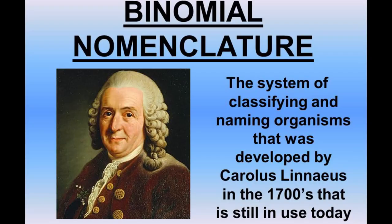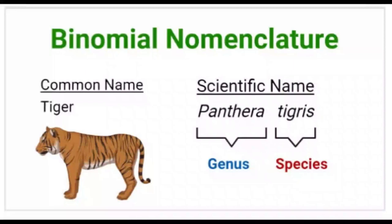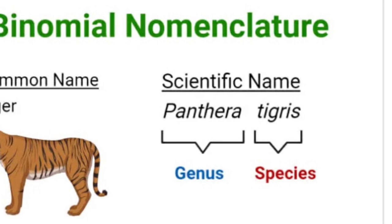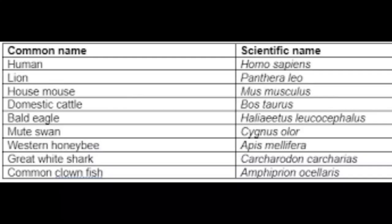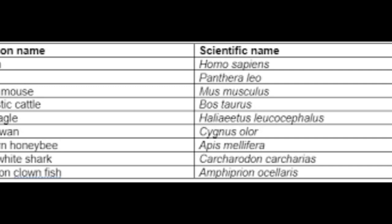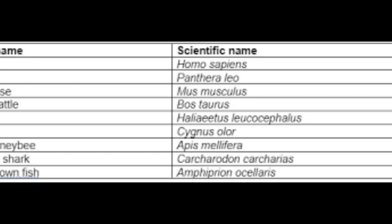In binomial nomenclature, each species is assigned a two-part scientific name. The first part is the genus name, capitalized, and the second part is the species name, in lower case. Scientific names are typically in Latin or Latinized forms. This choice of language ensures that scientists from different countries and linguistic backgrounds can use the same names, promoting consistency and avoiding confusion.